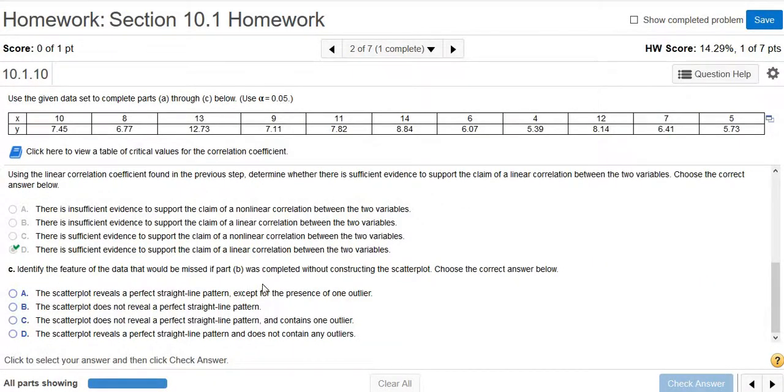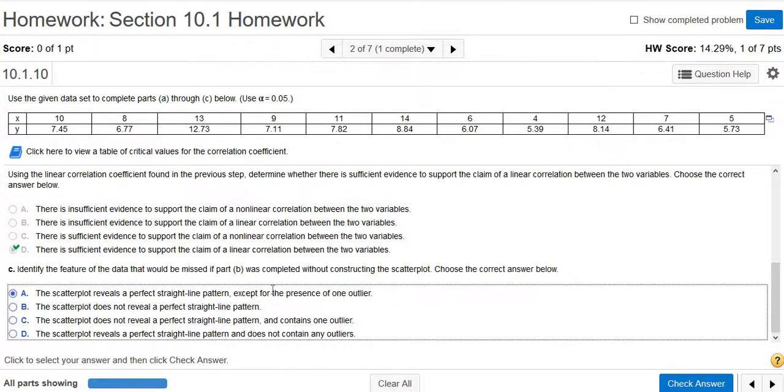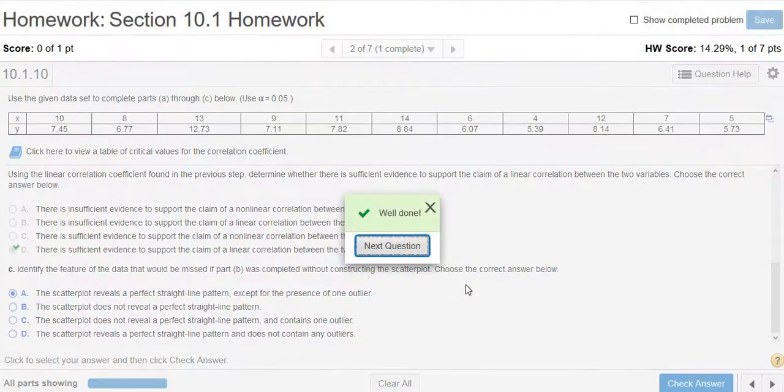Identify the feature of the data that would be missed if part B was completed without constructing the scatter plot. Choose the correct answer below. I would say it is this one. The scatter plot reveals a perfect straight line pattern, pretty much, except for the presence of one outlier. And that's it.